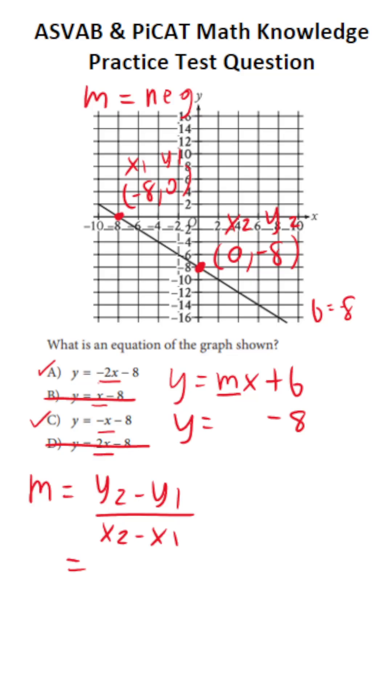Again, y2 is negative 8. So this is negative 8 minus y1. That's 0 over x2. x2 is right here. 0 minus x1 is right here. It's negative 8. All right. Let's solve this. Negative 8 minus 0 is negative 8. 0 minus negative 8. A negative minus a negative becomes a positive. So 0 minus negative 8 becomes 0 plus 8 or just positive 8.